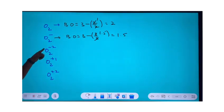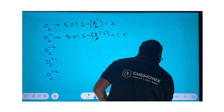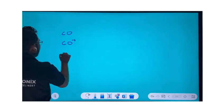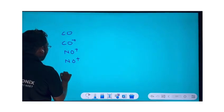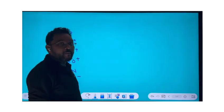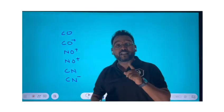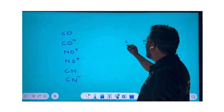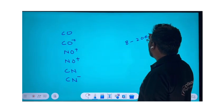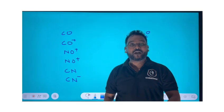You can also apply this formula to heterodiatomic particles like CO, CO⁺, NO, NO⁺, CN, CN⁺, CN⁻, and many more. However, this formula has limitations: it is applicable for 8 to 20 electron species only. If the species has fewer than 8 electrons, a different approach is needed.